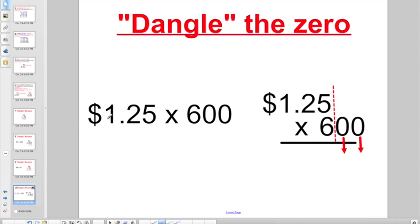Check out this one with a money problem. $1.25 times 600. Any number that has a multiple of 0 involved, you can always dangle the 0s, even if it's a money problem. I'm going to start here with 6 times 5. Hey, that's 30.